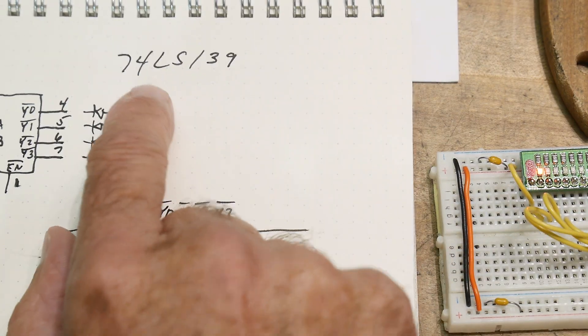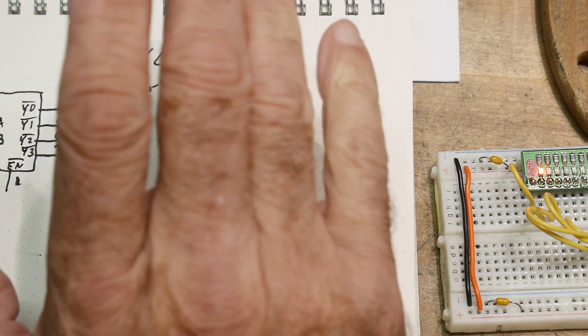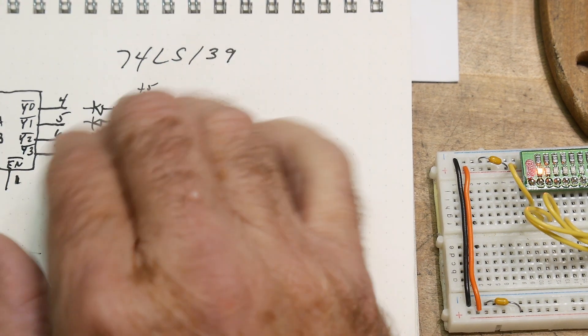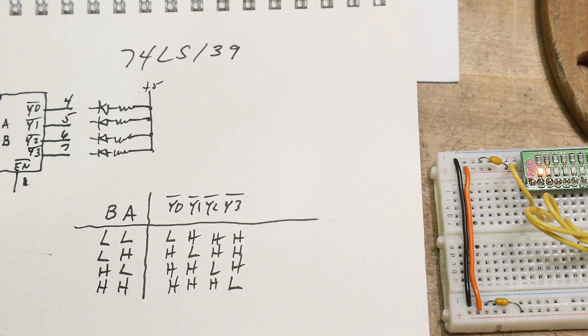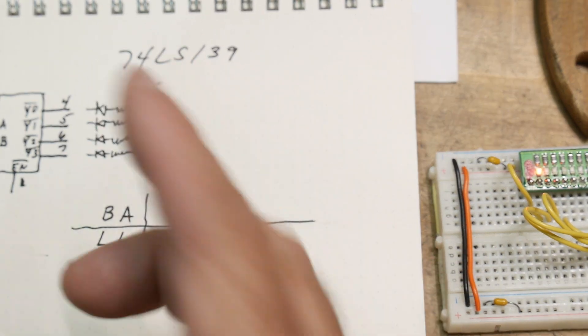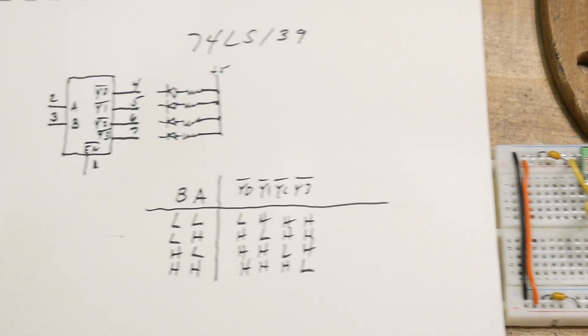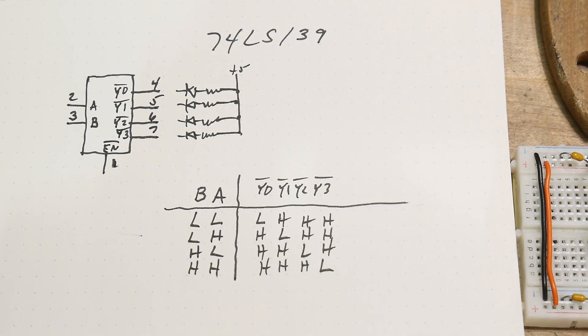I remember it was a really big deal when the LS parts came around. The LS parts were so much nicer. They drew so much less current. We were all excited about those. And then another big wave hit when they were HC parts or HCT parts. Those were just a great invention as well. So I remember both of those big waves.